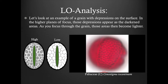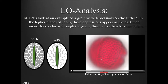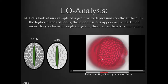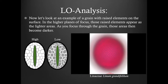Let's look at an example of a grain with depressions on the surface. Take a moment to watch the brief Z-stack video below. In the higher planes of focus, those depressions appear as darkened areas. As you focus through the grain, those areas then become lighter. In the higher planes of focus, those raised elements appear as lighter areas. As you focus through the grain, those areas then become darker.